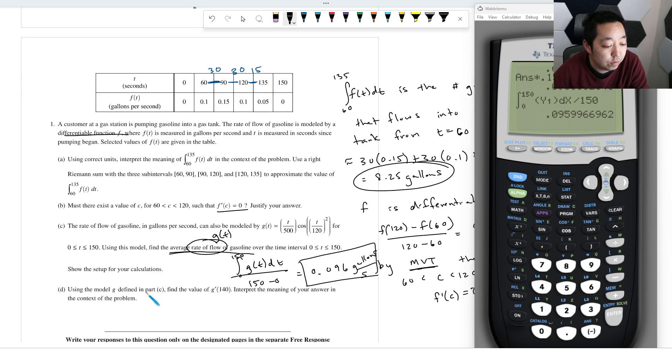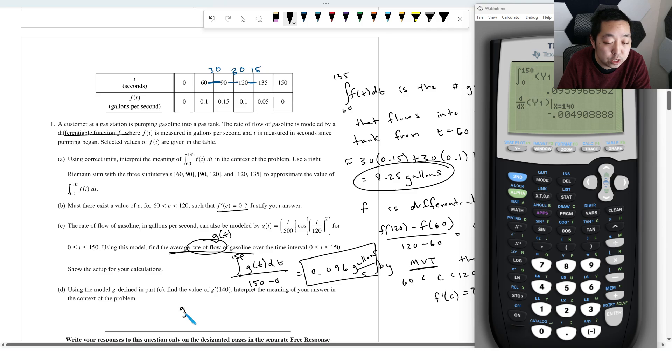Using the model G to find part C, find the value of G prime of 140. So we'll just compute that by doing the n derivative of this function variable Y1 at 140. So we say G prime of 140 is equal to negative 0.0049, and that is in units of, let's see, we'll always put the units because this is in gallons per second. When you take the derivative, it's going to be gallons per second squared.